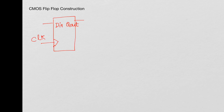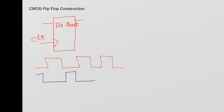The way this is supposed to function is: you have a clock running, and say you have data going this way — an example for data. If you look at the rising edges of all the clock here, so this is clock, and this is DIN, and the output will look like this.